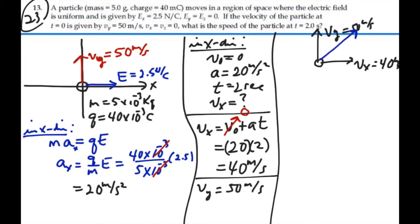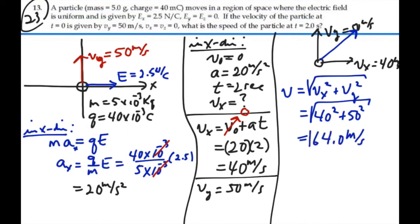our velocity is going to equal our x component squared, plus our y component squared, square root. That's going to be 40 squared plus 50 squared, square root. And that is 64.0 meters per second. So, after 2 seconds, the speed of the particle, the magnitude of its velocity, is 64.0 meters per second. It's going at some angle, which we could calculate if we were asked for that. But the final speed is 64 meters per second.